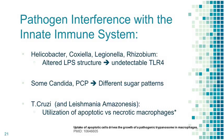How some bacteria evade the innate immune system: H. pylori, Coxiella, Legionella, Rhizobium, even Candida and PCP — they simply change their structure, sometimes more than once, or some species are just different and we don't detect them anymore.